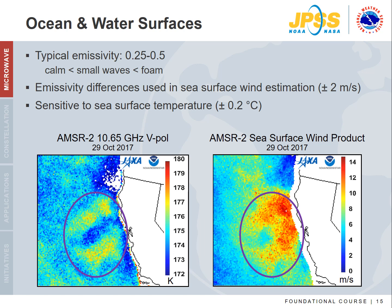Low frequency channels from 6 to 10 GHz are used for their sensitivity to sea surface temperature. Sea surface temperature is accurate to a few tenths of a degree, and near-surface wind speed is accurate to within 2 meters per second.